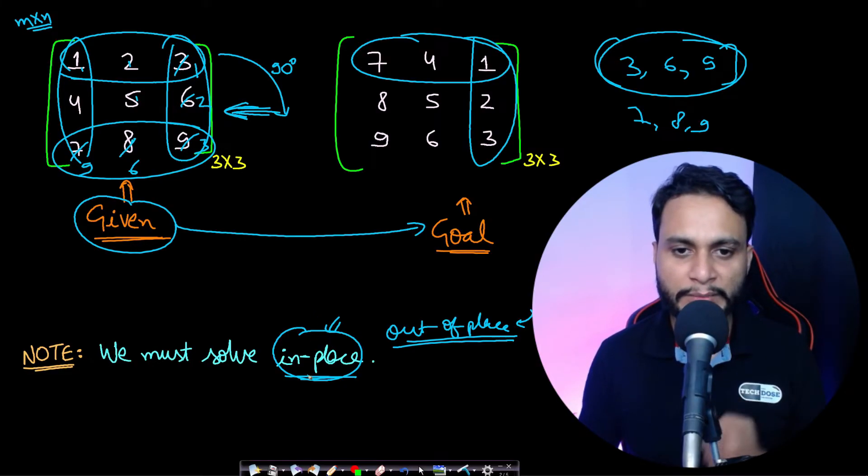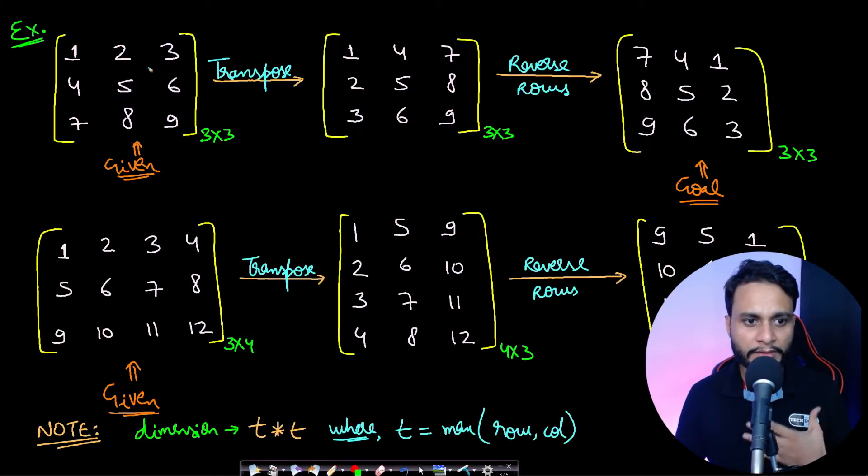Hence in this problem we will look at in-place algorithm to solve this problem. Now let us look at an example and try to understand what is the technique. I am taking the same example first which is a square matrix in this case, and the technique is just a two-step process: we have to find the transpose of the matrix and then we have to reverse the rows.